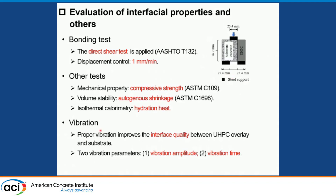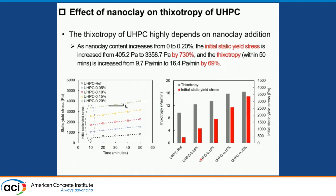Previous research indicates that proper vibration could improve the interface properties between the UHPC overlay and the substrate, but the effect has not been quantified. So two vibration parameters are considered: vibration amplitude and vibration time. The results show that the initial static yield stress and thixotropy of UHPC are highly dependent on nanoclay addition. As nanoclay content increases from 0 to 0.2%, the initial static yield stress increases from 405 Pascal to 3,585 Pascal — an increase of 730%. The thixotropy within the first minute increases from 9.7 Pascal per minute to 16.4 Pascal per minute, an increase of 69%. We can see a significant improvement.